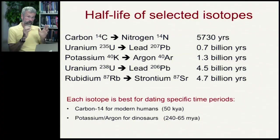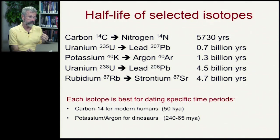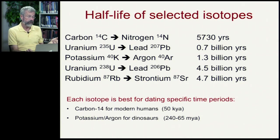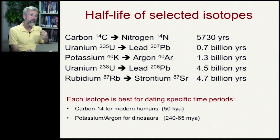Each isotope, given its short versus long half-life, is best for dating specific time periods. If we're looking at archaeological sites — when early man first came to Europe, or when people came across the Bering Straits from Asia to North America — we'd use carbon-14. But if we want to estimate when the dinosaurs were roaming, we'd look at potassium-argon, which covers things that happened 240 to 65 million years ago.